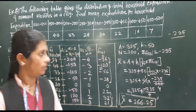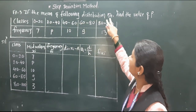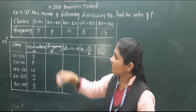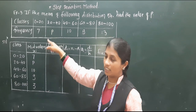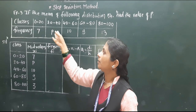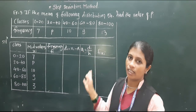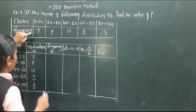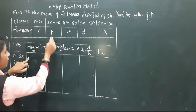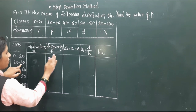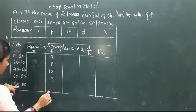Now we look at the next example. If the mean of the following distribution is 54, find the value of P. In previous examples the classes and all frequencies were given. Here one frequency is missing and replaced by P, and we have to find the value of P — that is, the frequency of the class 20 to 40. Sometimes two frequencies may be missing; we solve it the same way. The frequencies given are 7, P, 10, 9, and 30.